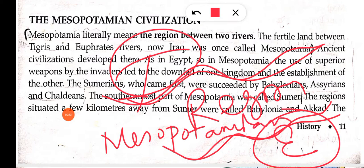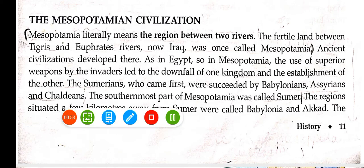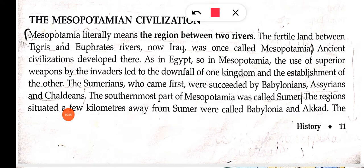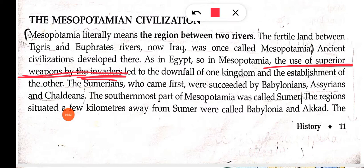Ab ek baat aur suniye — Mesopotamia aaj ke din mein Iraq ko bola jata hai. Mesopotamian civilization mein bhi, Egyptian civilization ki tarah, superior weapons ke karan ek kingdom ka downfall hota tha aur dusri ka establishment. The use of superior weapons by the invaders caused one kingdom's downfall and another's establishment.